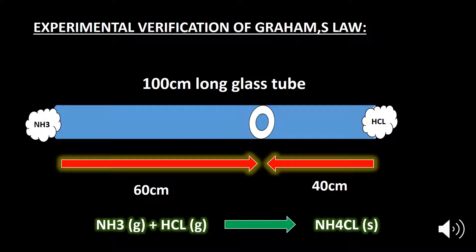For experimental verification, a 100 cm long glass tube is placed horizontally and closed on both ends by cotton swabs. HCl solution is poured on one swab and ammonia on the other using a dropper. The vapors of both substances travel through the tube and a white ring forms at the point of contact, where the two substances react to produce white ammonium chloride deposited on the inner walls. This white ring forms 60 cm from the ammonia end and 40 cm from the HCl end.